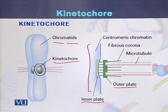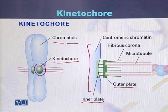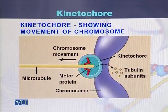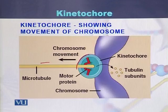There are two plates: the inner plate, which is present on the centromere region of the chromosome, and the outer plate, which is formed after the attachment of the microtubules. In this diagram, we can see that chromosomes are moving because they are being pulled by the microtubules, which are attached at the kinetochore region of the centromere.